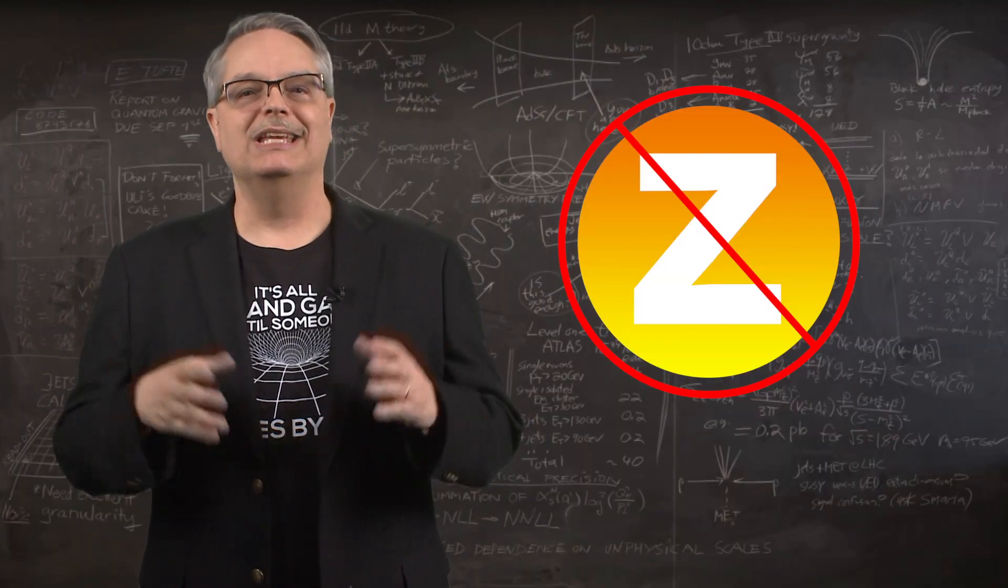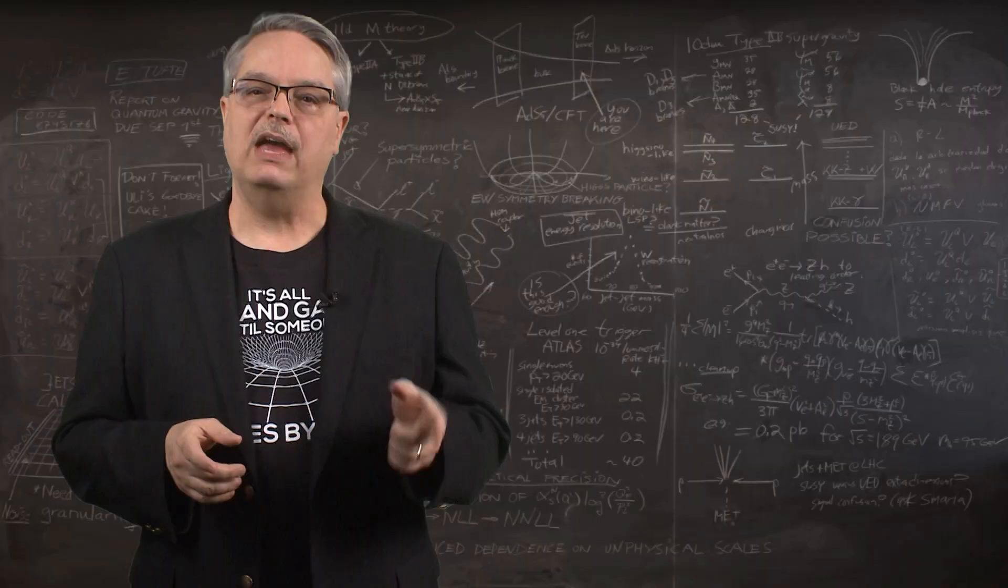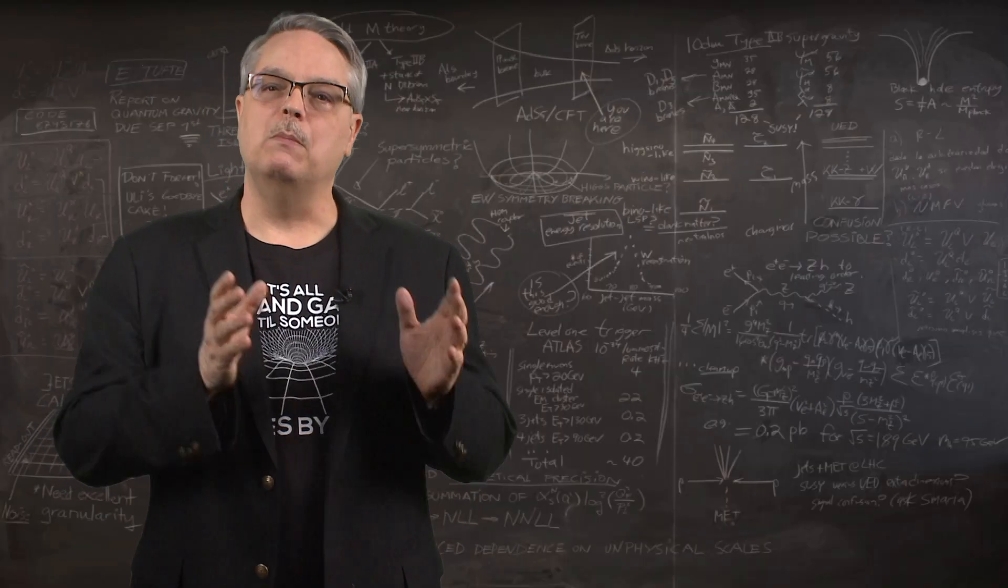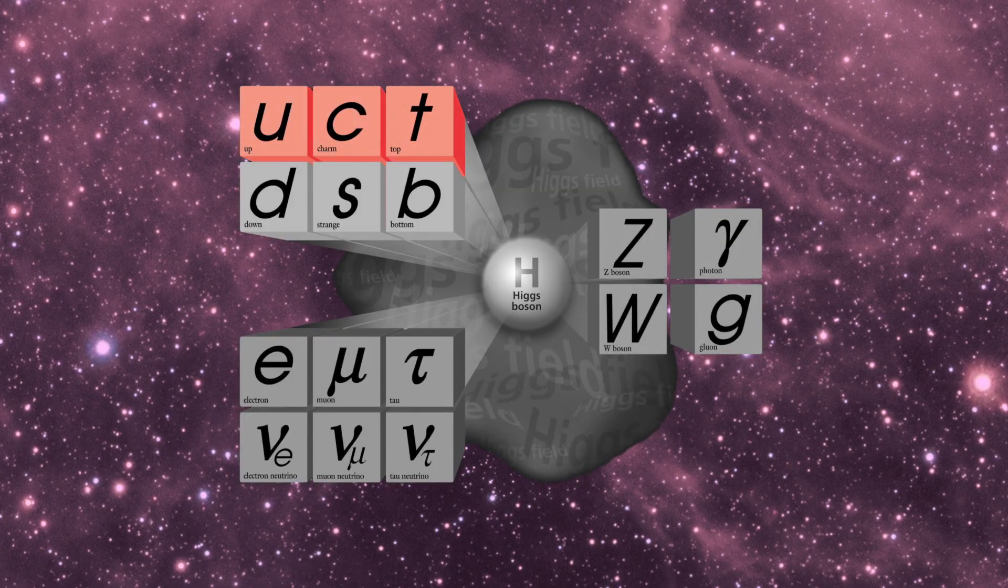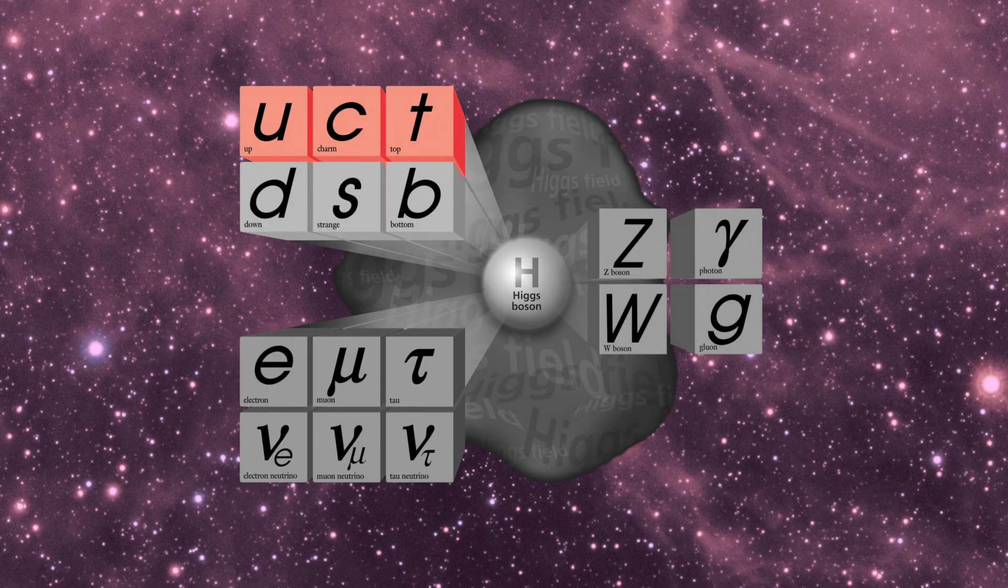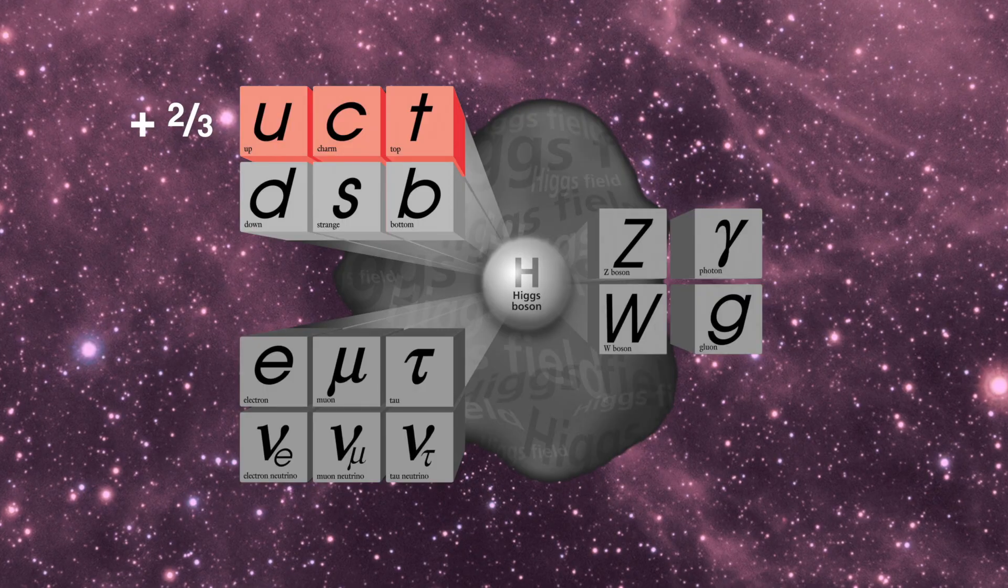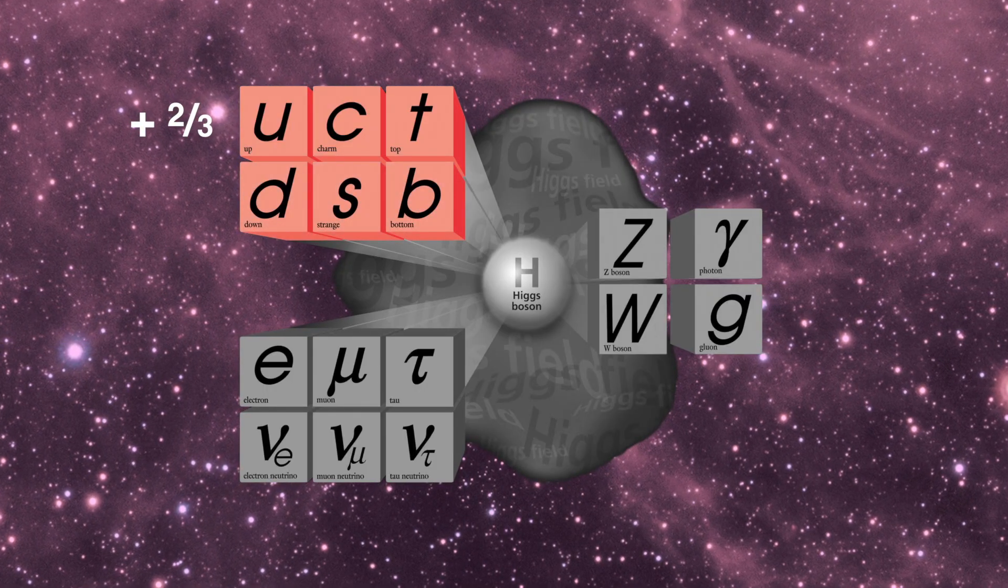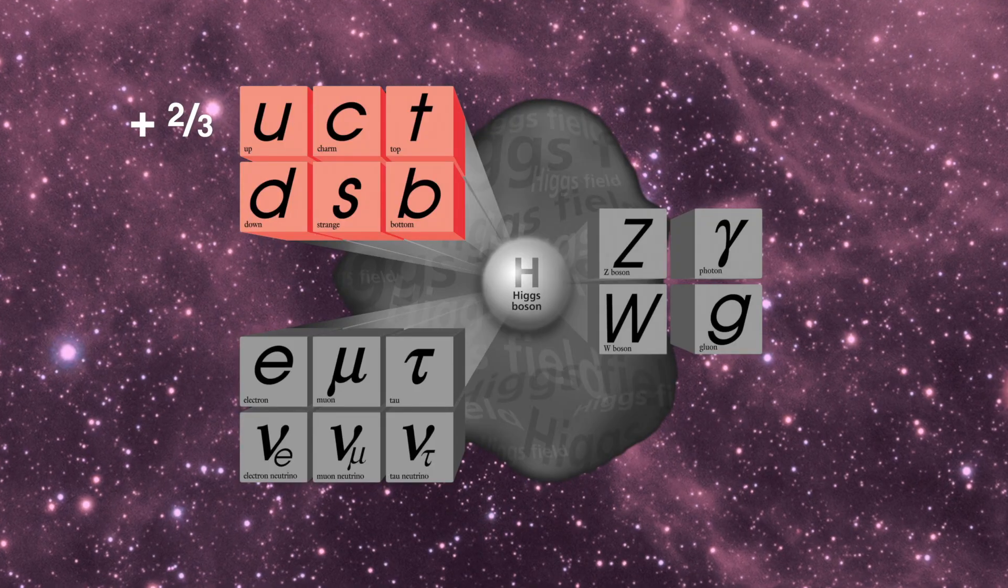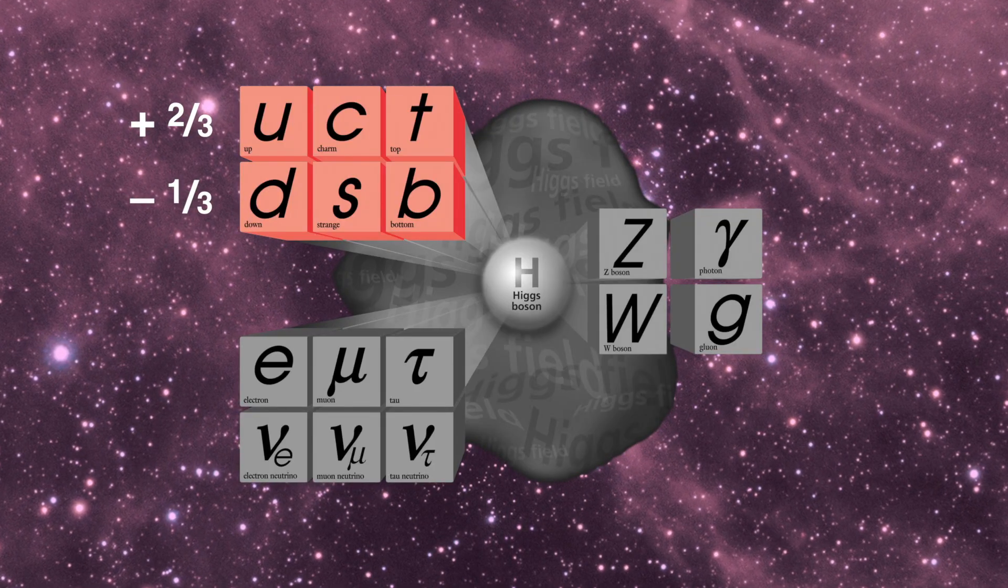So the Z boson has zero electrical charge. So that means when it's emitted that the emitting particle can't change its charge. The top, charm, and up quarks all have the same electric charge, specifically plus two thirds that of a proton, while the bottom, strange, and down quarks all have the same charge as well, this time with a charge of minus one third that of a proton.